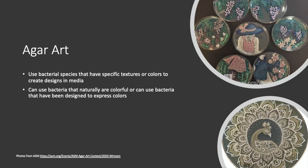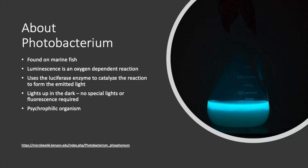A little bit about Photobacterium phosphoreum: it's an organism found on marine fish and it produces luminescence through an oxygen-dependent reaction. In this picture, which we took from the dark room in lab, you can see that in a flask, oxygen is only going to be at the top level. So the bottom part of the liquid culture is anaerobic — there's no oxygen there. Just this small band at the top where the oxygen is will be lit up, and you can see that in this picture.